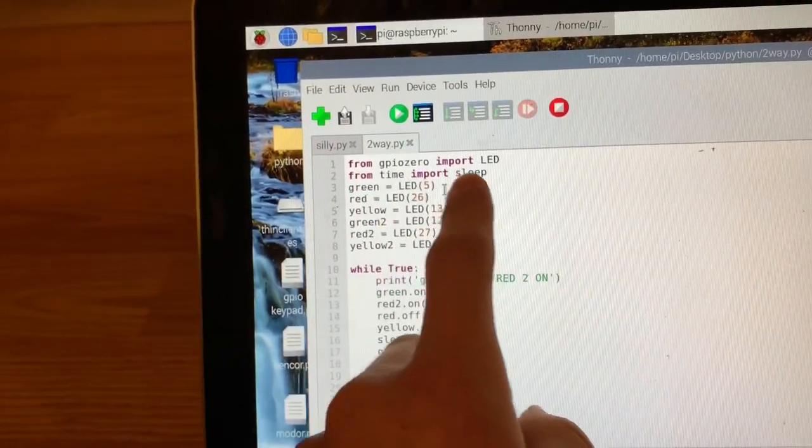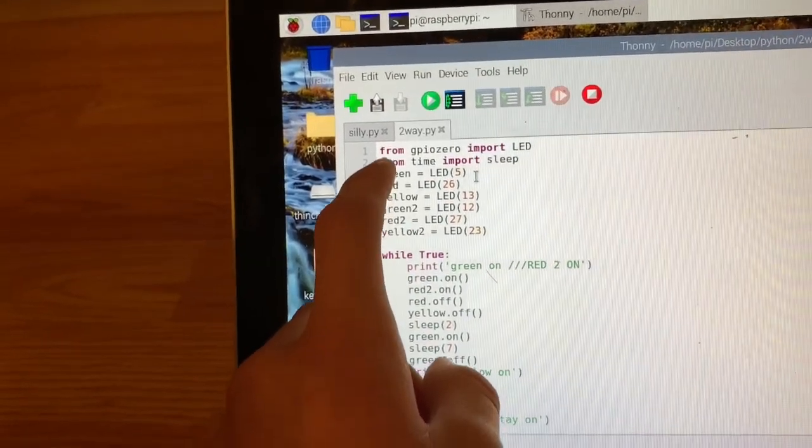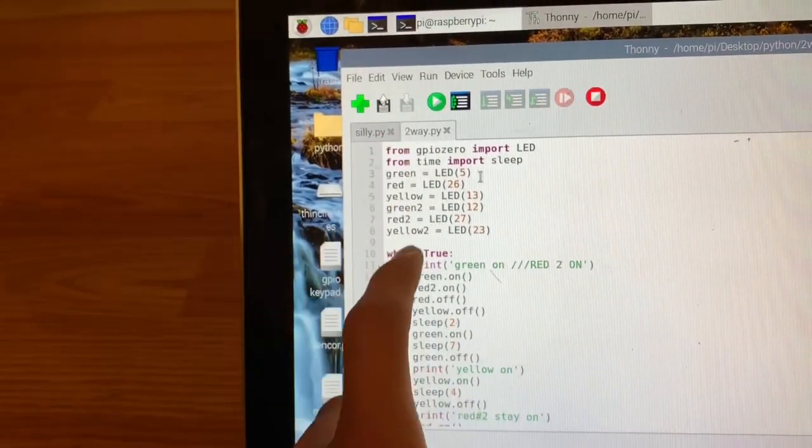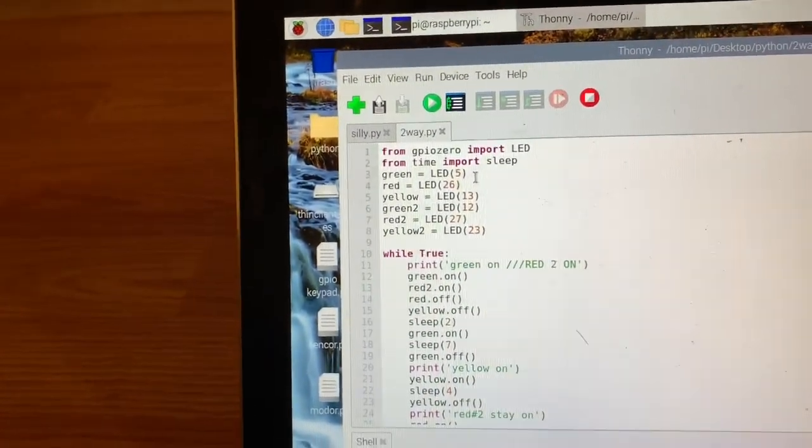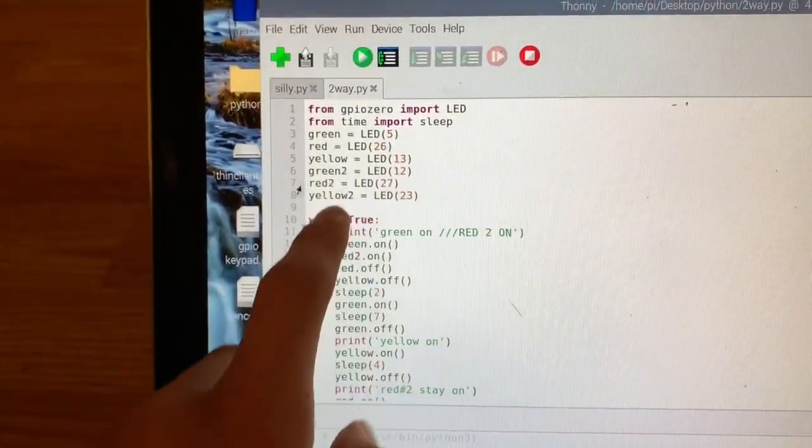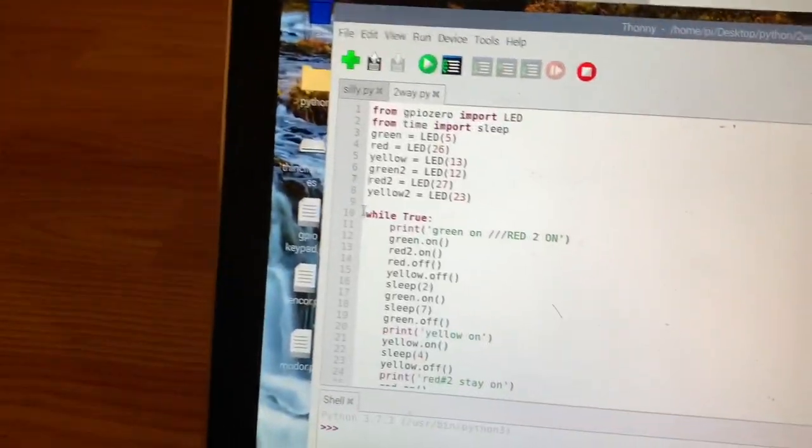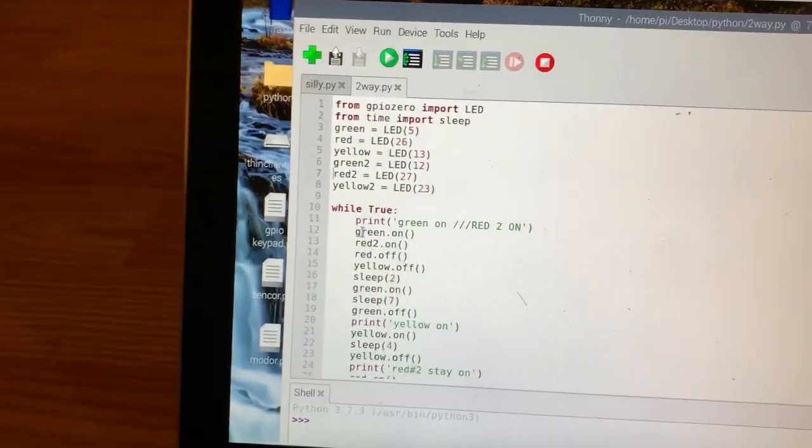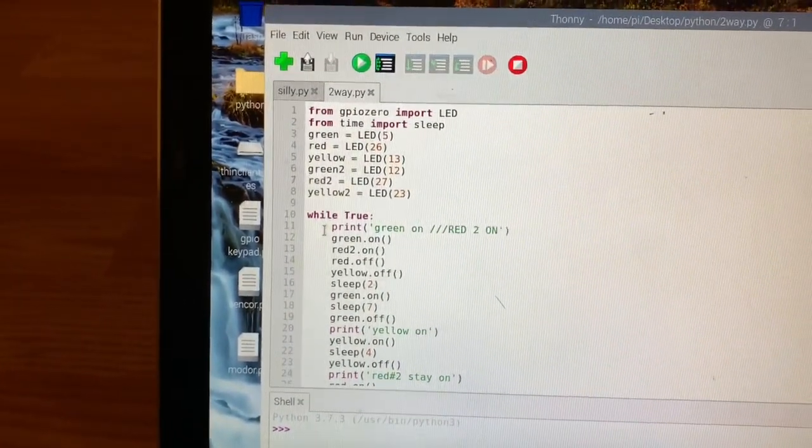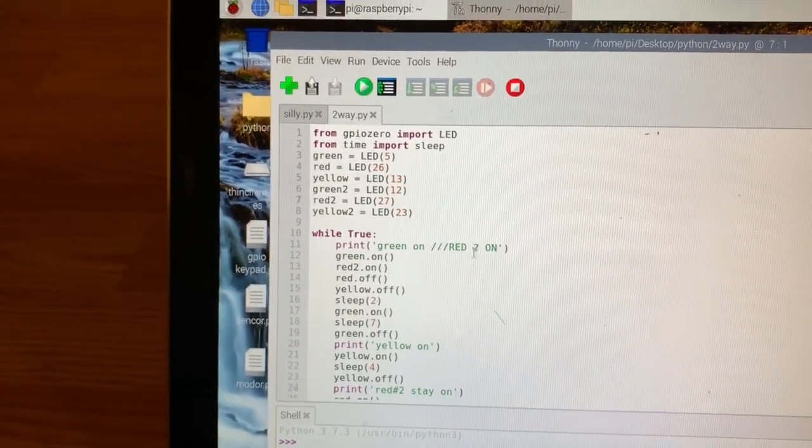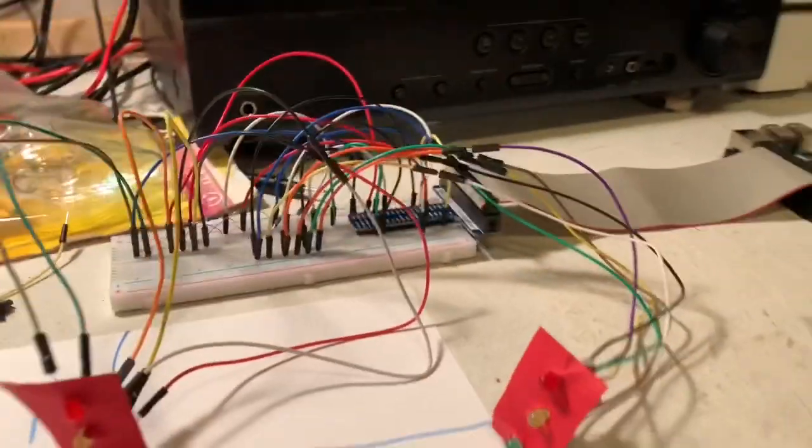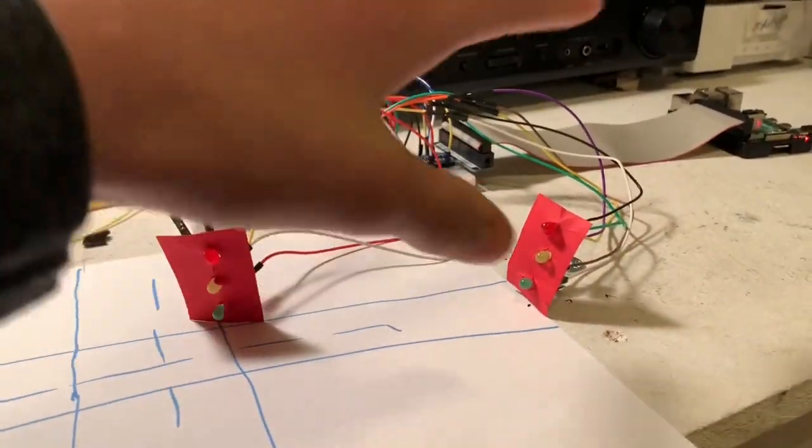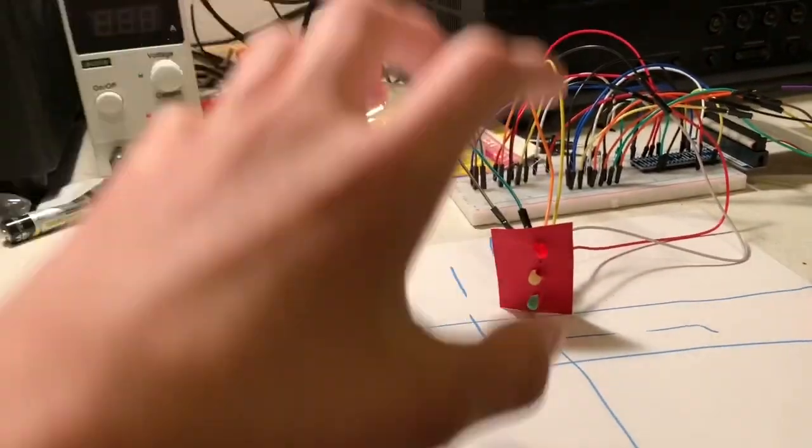Importing all the LEDs as their GPIO pins as assigned. Only anything under while true is where everything really got different. So over here it's basically print green on and red 2 on. So red number 2 is this traffic light right here.